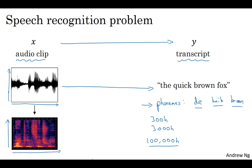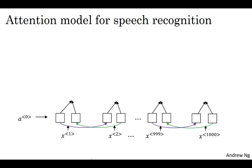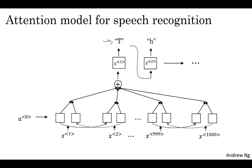So how do you build a speech recognition system? In the last video, we talked about the attention model. One thing you could do is on the horizontal axis, you take in different time frames of the audio input, and then you have an attention model try to output the transcript like the quick brown fox or whatever was said.